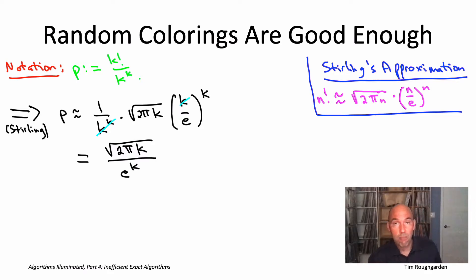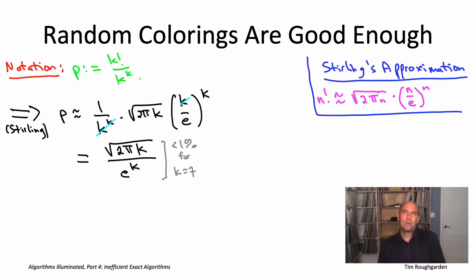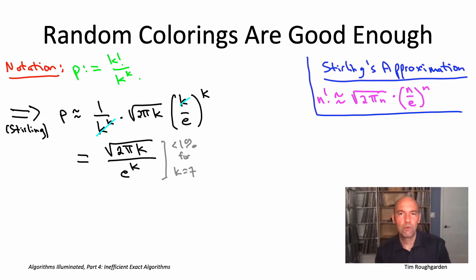So this looks pretty bad. Our probability of success p, meaning the probability that we transform a given k-path into a panchromatic path using a uniformly random coloring, that's decreasing exponentially fast with k. You can see that e to the k in the denominator. So in fact, even if you just plug in k equals 7, this is already less than 1%, which is kind of a bummer. On the other hand, who says we have to stop with just one uniformly random coloring? It's a randomized algorithm. It's going to do different things the more times we run it. So we could just do a bunch of independent random trials.